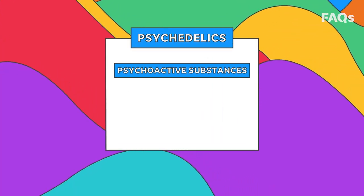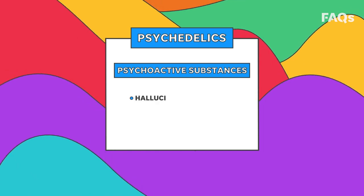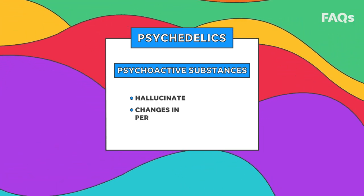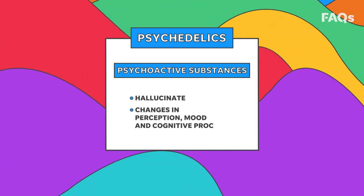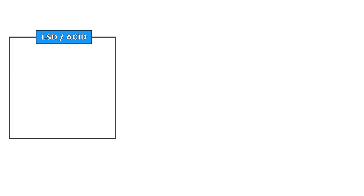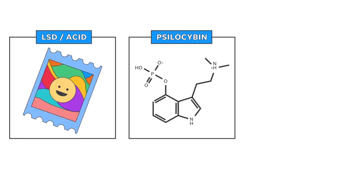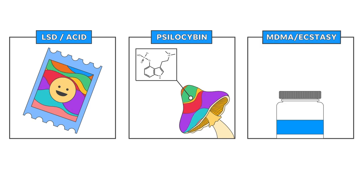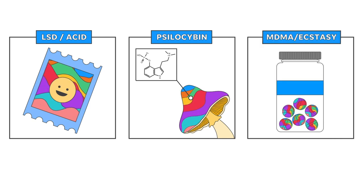Psychedelics are a class of psychoactive substances. They can cause a person to hallucinate or cause changes in perception, mood, and cognitive processes. Common psychedelics include LSD or acid, psilocybin, the active ingredient in magic mushrooms, and MDMA, otherwise known as ecstasy.